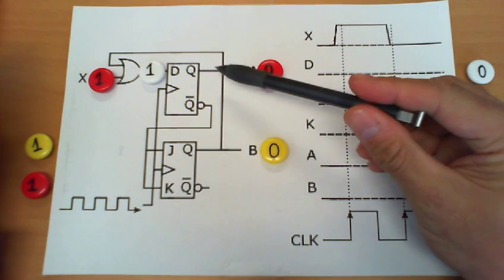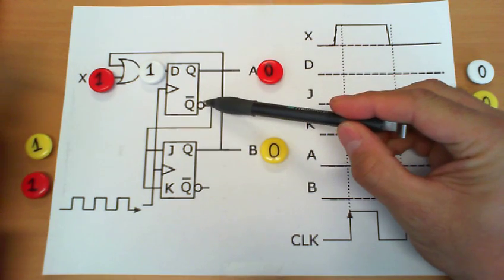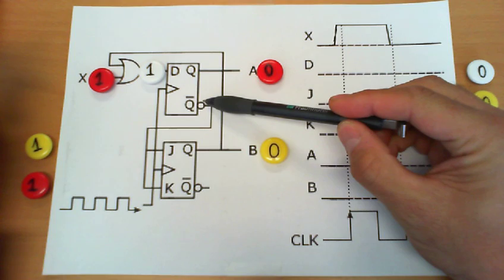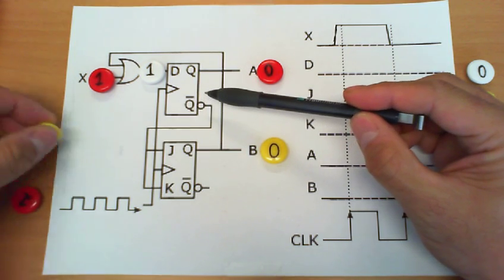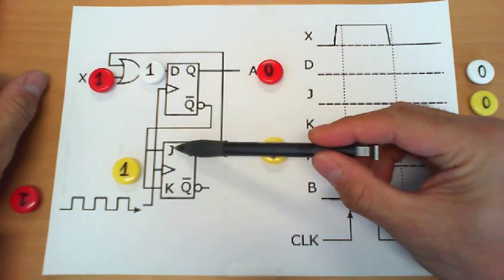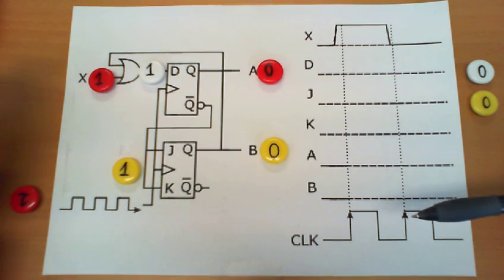A value 0 on the output of this latch implies that the opposite value is coming out of this output. And therefore we have a value 1 in both the J and K signals of this flip-flop.